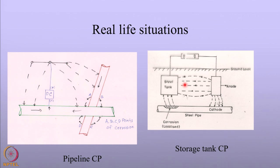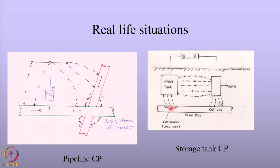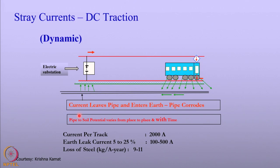What is shown on the right side is a cathodic protection system of a tank using an impressed current system with an anode. There is a foreign pipeline going very close to the steel tank. A part of the current leaves the anode and enters this pipeline. When the pipeline nears the steel tank, the current that travels in the pipeline jumps into the soil, leading to corrosion. This normally occurs in plants where storage tanks are located, as opposed to cross-country pipeline networks.